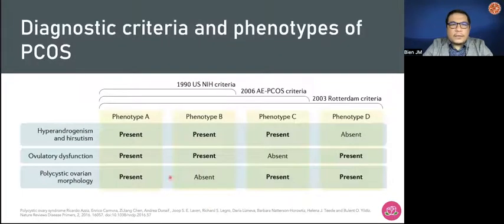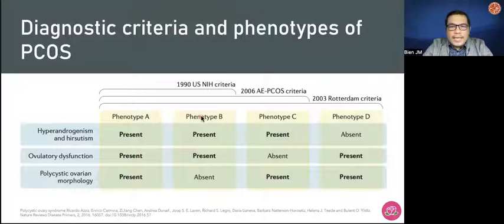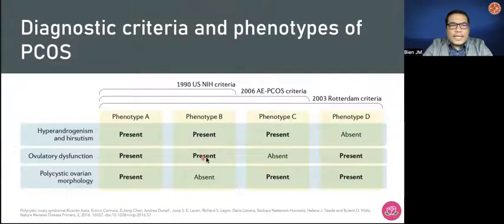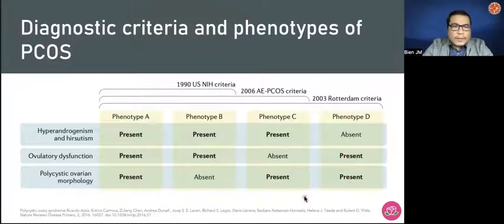It's basically a diagnosis of exclusion. Very important for this talk is the different phenotypic classification of PCOS based on the Rotterdam criteria. The PCOS phenotypes include A, B, C, and D. Phenotype A is characterized by hyperandrogenism and hirsutism, ovulatory dysfunction, and polycystic ovarian morphology. Phenotype B is hyperandrogenism and hirsutism with ovulatory dysfunction. Phenotype C is hyperandrogenism and hirsutism with polycystic ovarian morphology. Phenotype D includes patients with ovulatory dysfunction and polycystic ovarian morphology.